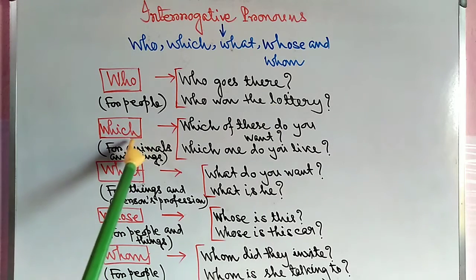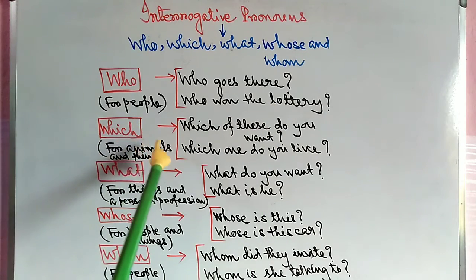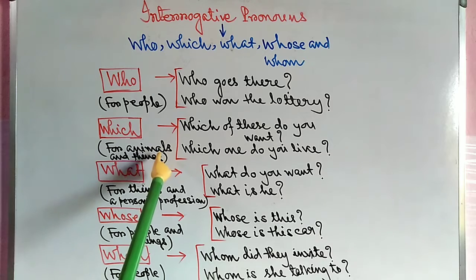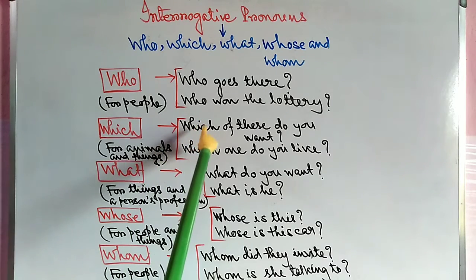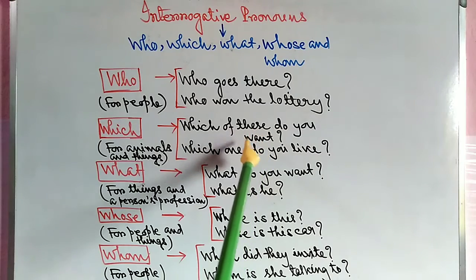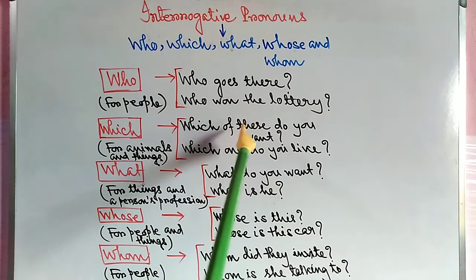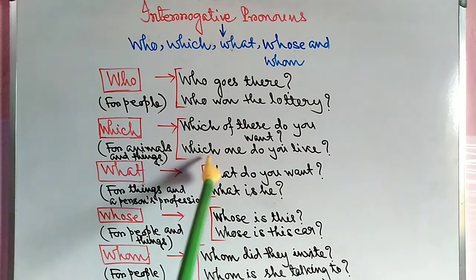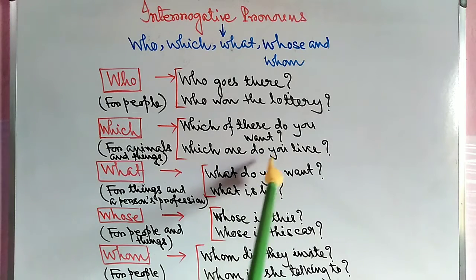Which is applied to animals and things. Which animals — even kono jinnisher khetre vabhar kara hai. For example, which of these do you want? Agular modde tumhi kundi chau. Which one do you like? Tumhi kundi pachantho karo.